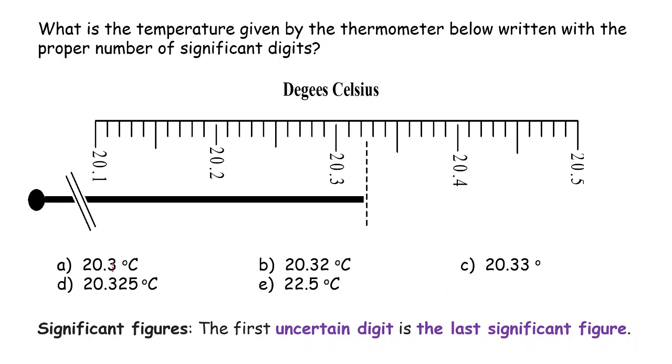So then that is against this definition here. It says the last digit is uncertain. But in this case, this digit, the first decimal place, is certain. So therefore, just by definition, we know A is incorrect.